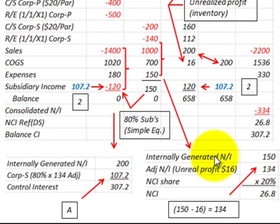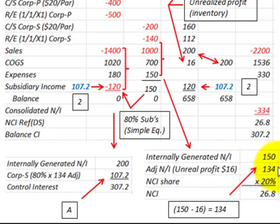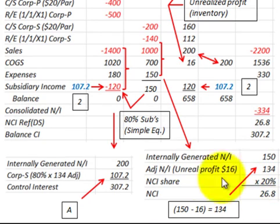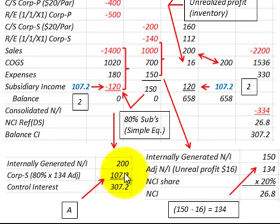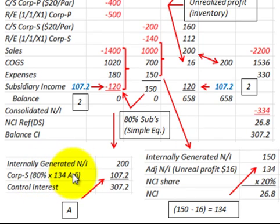Continuing with the simple equity method: on the subsidiary's income distribution schedule, they had internally generated income of $150,000. We then made an adjustment for unrealized profit of $16,000, bringing it down to $134,000. The non-controlling interest gets 20% of that at $26,800. On the parent's income distribution schedule, the parent had internally generated income of $200,000, then takes 80% of the adjusted $134,000, giving a controlling interest of $307,000.